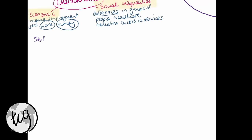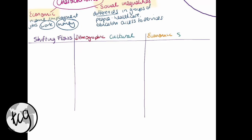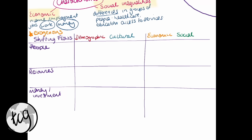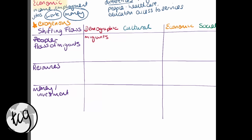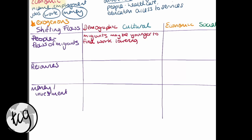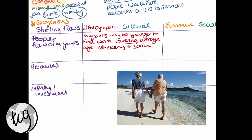We're going to look at how demographic, socio-economic and cultural characteristics of places are shaped by shifting flows of people, resources, money and investment at different scales — very similar to your exogenous factors. One flow of people could be migrants: migrants coming into a place can change the demographics, as they often include younger people looking for work. Migrants can be internal — for example rural to urban migration — or external. This may lower the average age of a place. Another example is elderly people in the UK moving to seaside resorts or Spain, which may increase the average age and change demographics.